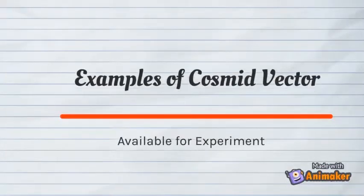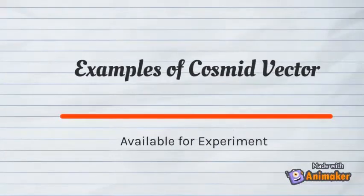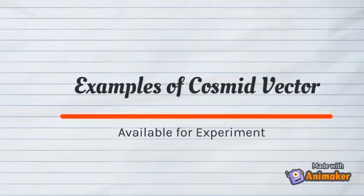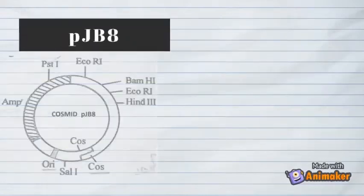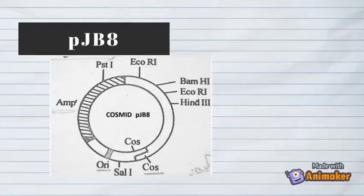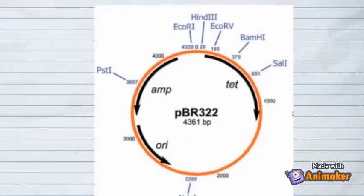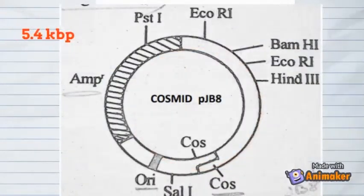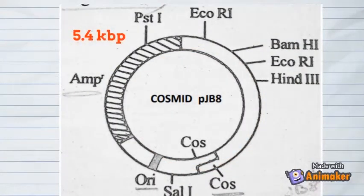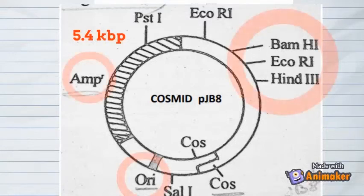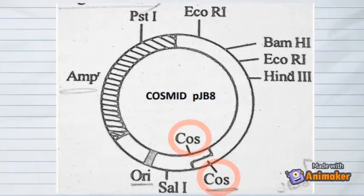Now let us discuss some examples of cosmid vectors available for experiments. The first cosmid to be introduced is cosmid pJB8. It is constructed from the plasmid pBR322 and cos sites of lambda DNA. The size of this cosmid is 5.4 kbp. The origin of replication and ampicillin resistance gene are derived from pBR322, while its two cos sites are derived from lambda DNA.